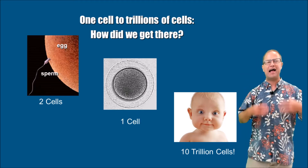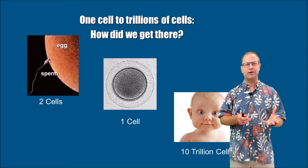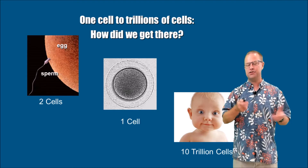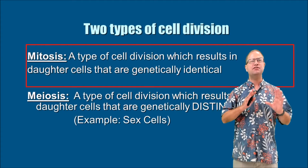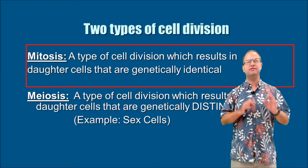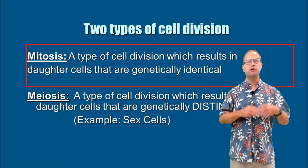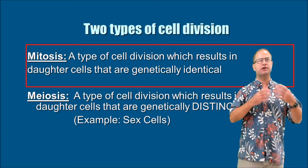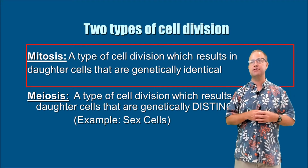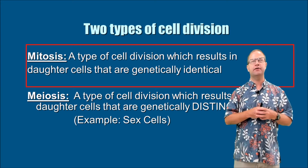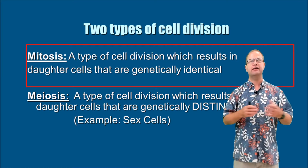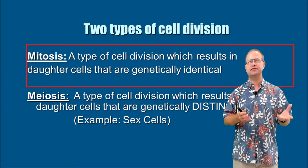So the question is, how did we get here? Well, the answer is mitosis. Mitosis is a type of cell division which results in the production of daughter cells that are genetically identical to one another and genetically identical to the parent cell.